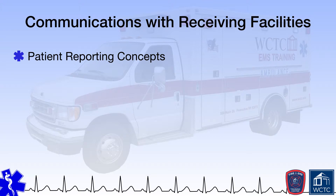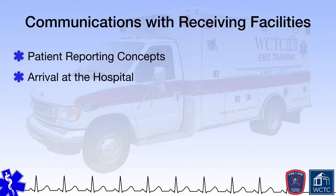When contacting the receiving facility, there are several key pieces of information that should be provided. These include your unit number, who you are transporting, the gender and age of the patient, the patient's chief complaint, pertinent history, pertinent assessment findings including vital signs, interventions performed including medications administered, how the patient responded to those interventions, the patient's current status including mental status, and your estimated time of arrival. If you have 12-lead telemetry and the call could be cardiac in nature, be sure to transmit that data to the receiving hospital. If the hospital requests additional interventions or medications, do so if they fall within your offline protocols; otherwise, contact your online medical control for additional guidance.